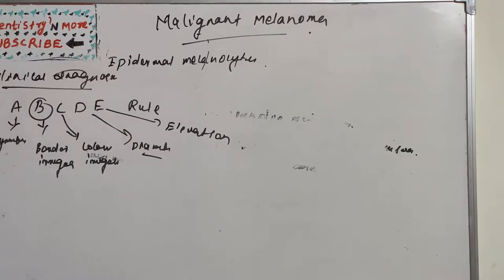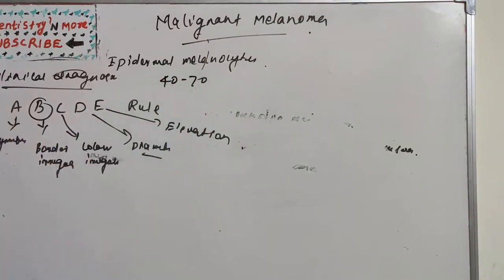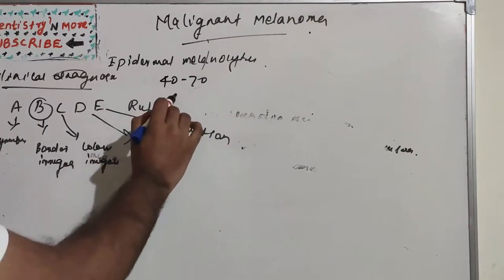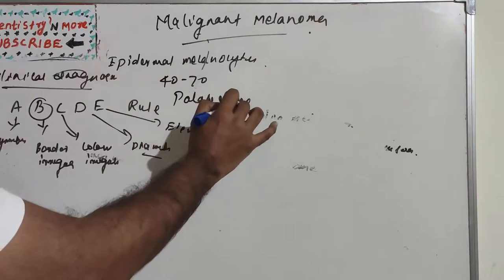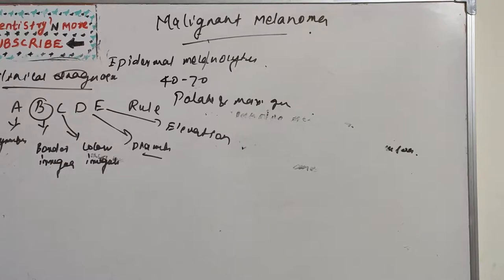Regarding oral manifestations, malignant melanoma is twice as common in men than in women, most commonly seen in the 40–70 age group, with a predilection for the palate and maxillary gingiva. It appears as a deeply pigmented area, at times ulcerated and hemorrhagic, which tends to progressively increase in size. Oral melanomas exist in superficial spreading, acral lentiginous, and nodular types.